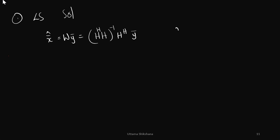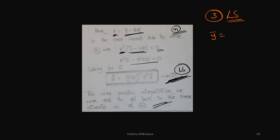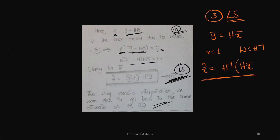Now consider three things from the least square solution. Taking the SIMO — single input multiple output — case, where T equals 1, so H is R×1. This connects to MRC. For the case R equal to T, W equal to H inverse is the solution. Multiplying H inverse times HX-bar, we recover X-bar cleanly. This is actually the optimal solution when there is no noise or when SNR is very high.